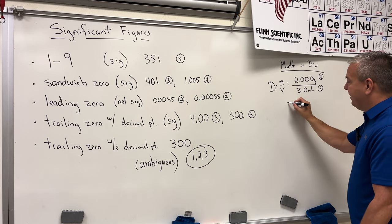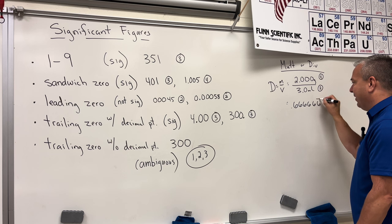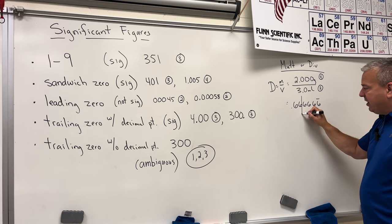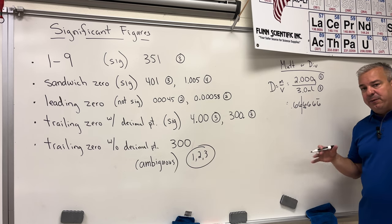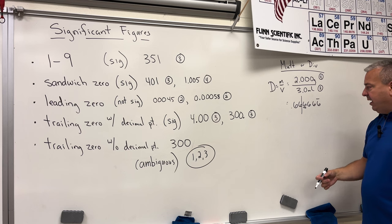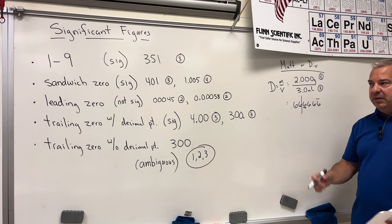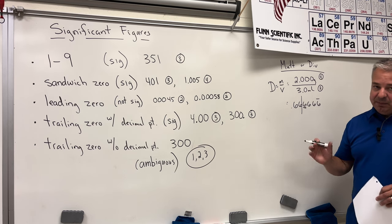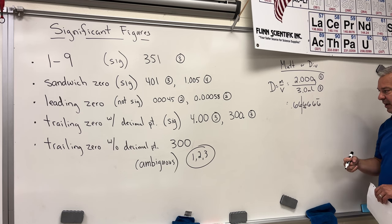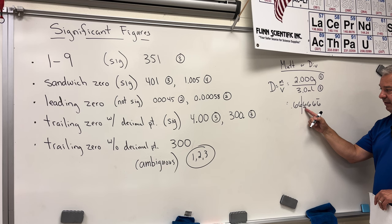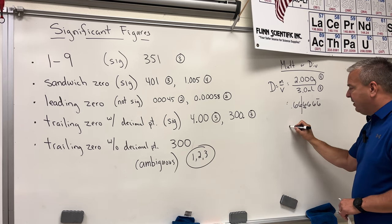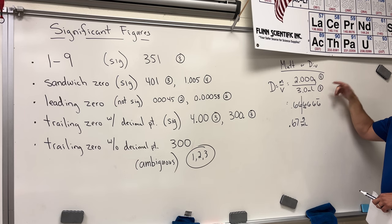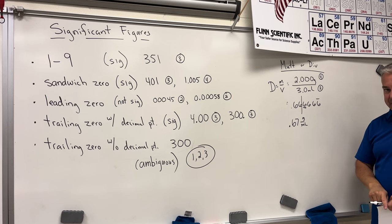When I plug this in the calculator, I get 0.6666666 repeating. Since I can only report two sig figs, here's the cutoff after the first two digits. I use the next digit to the right for rounding — five and above we round up, four and below we truncate. The next digit is a six, which is five and above, so it rounds that six up to a seven. The answer is 0.67 grams per milliliter. Four sig figs divided by two sig figs — whichever is the least, that's how many digits I report.